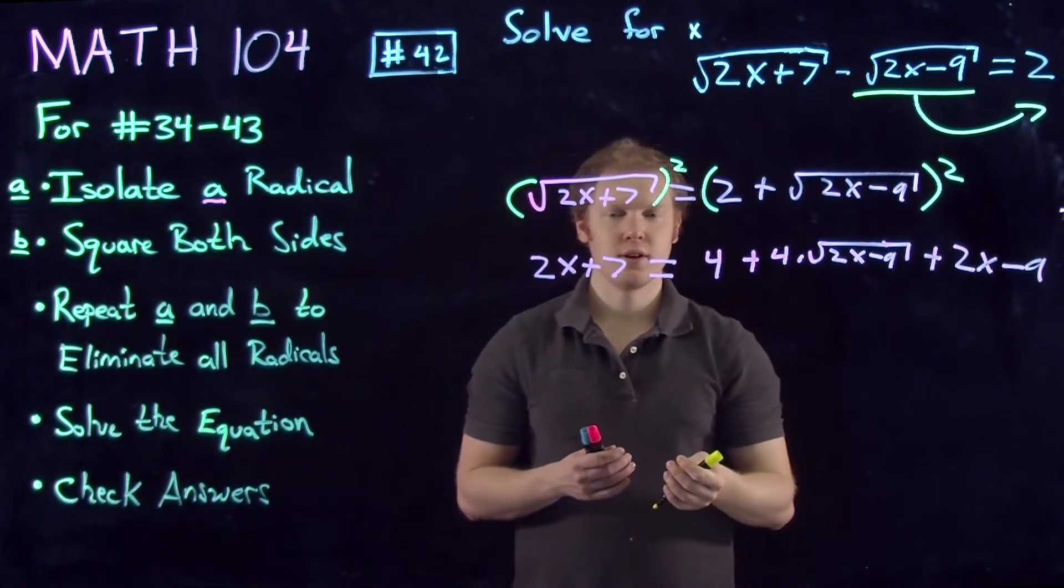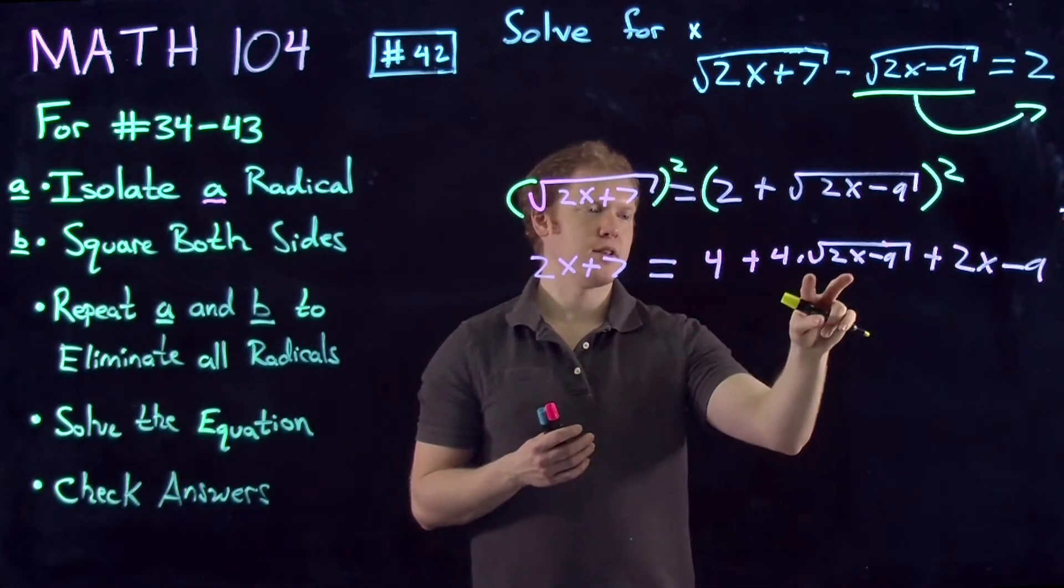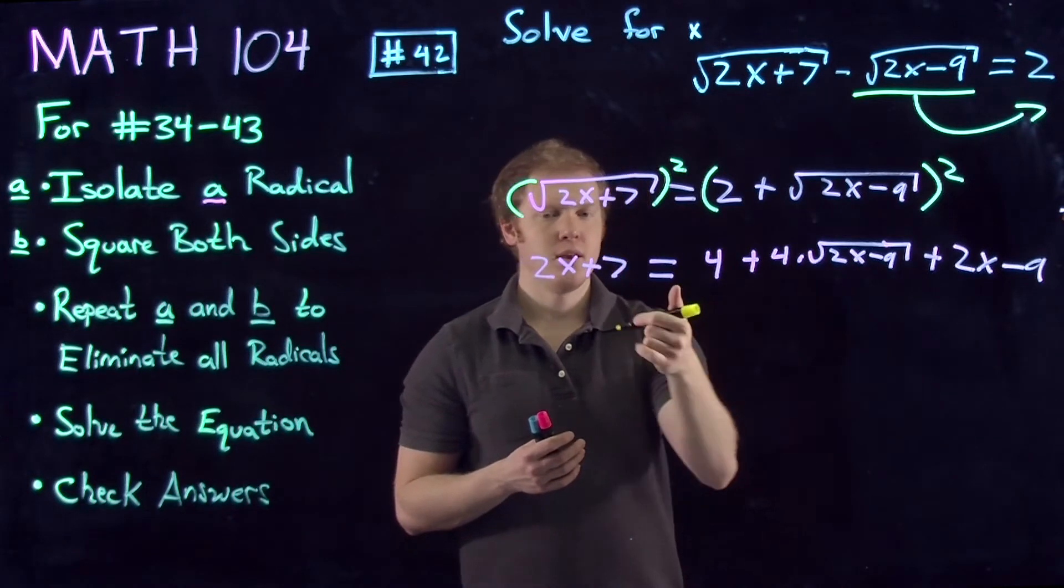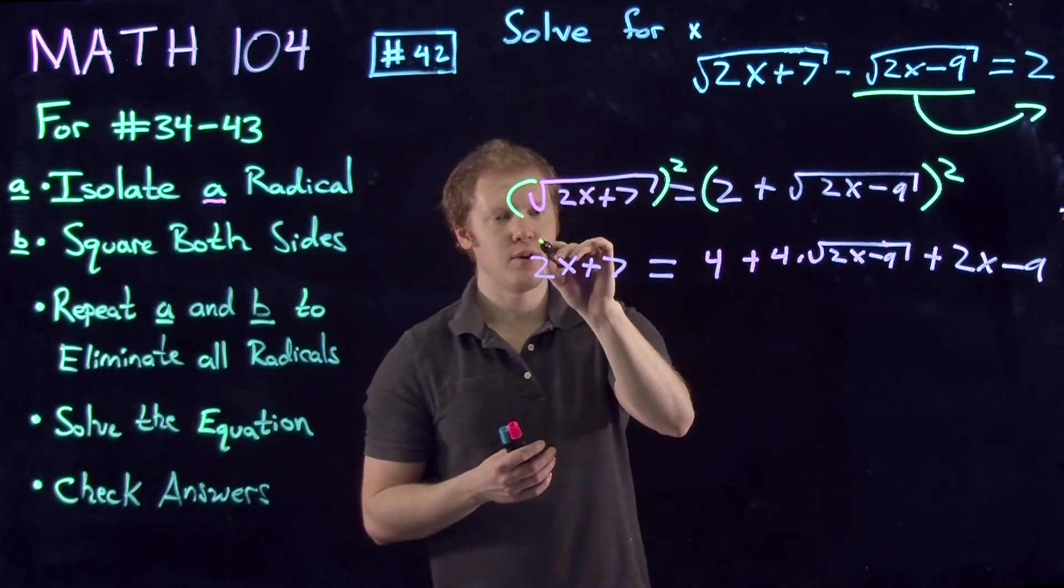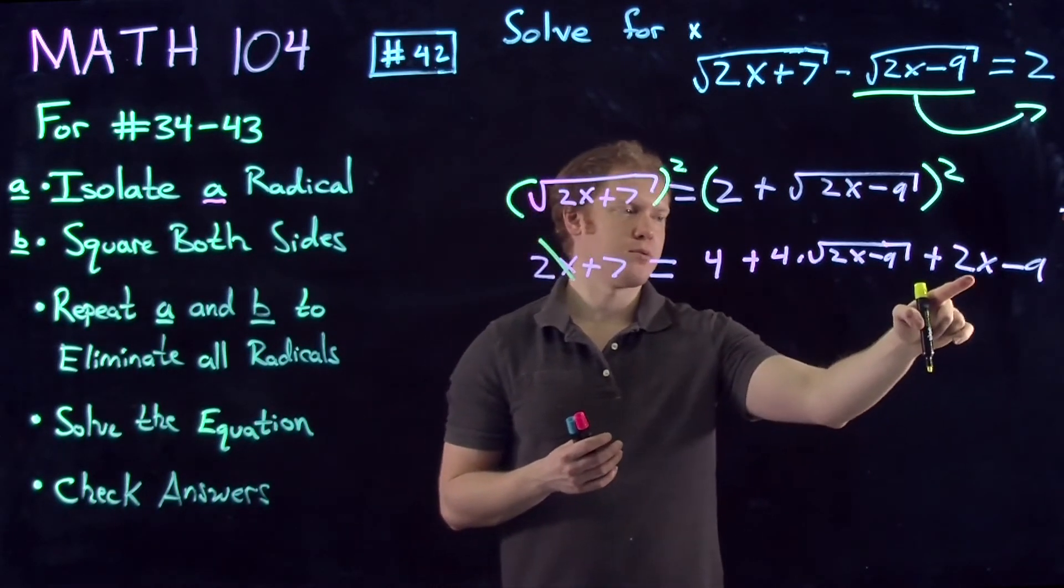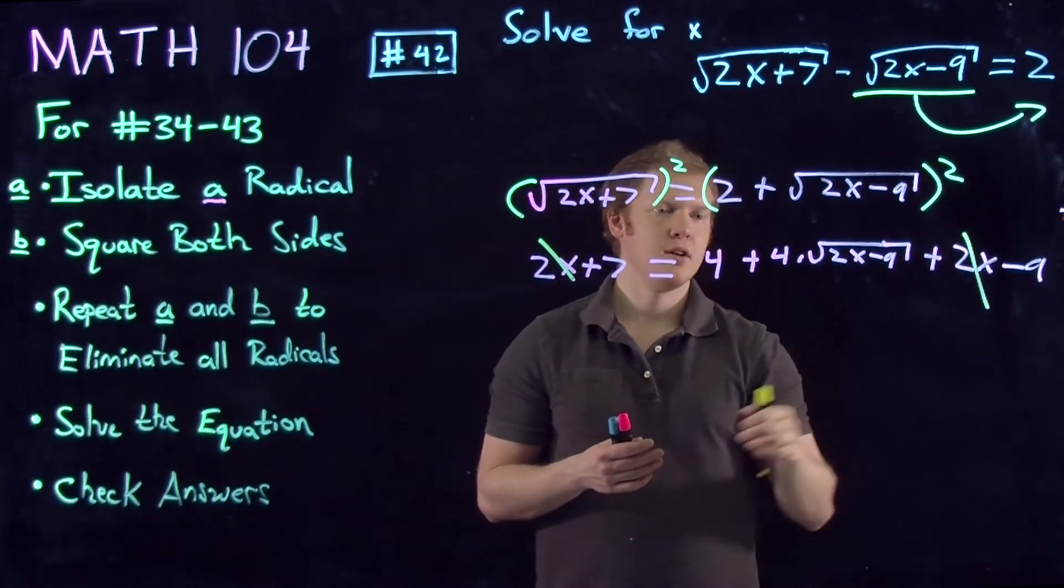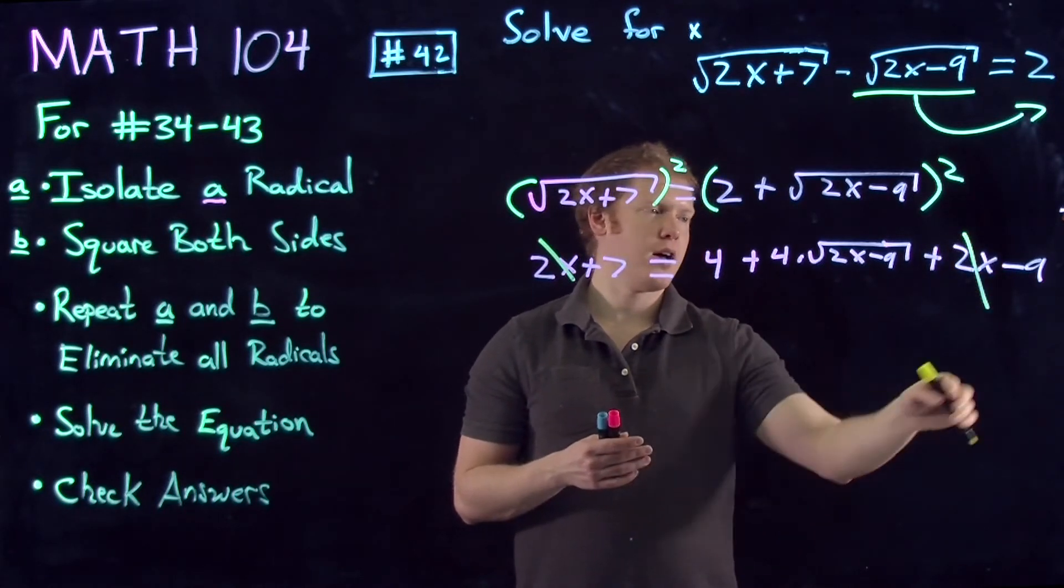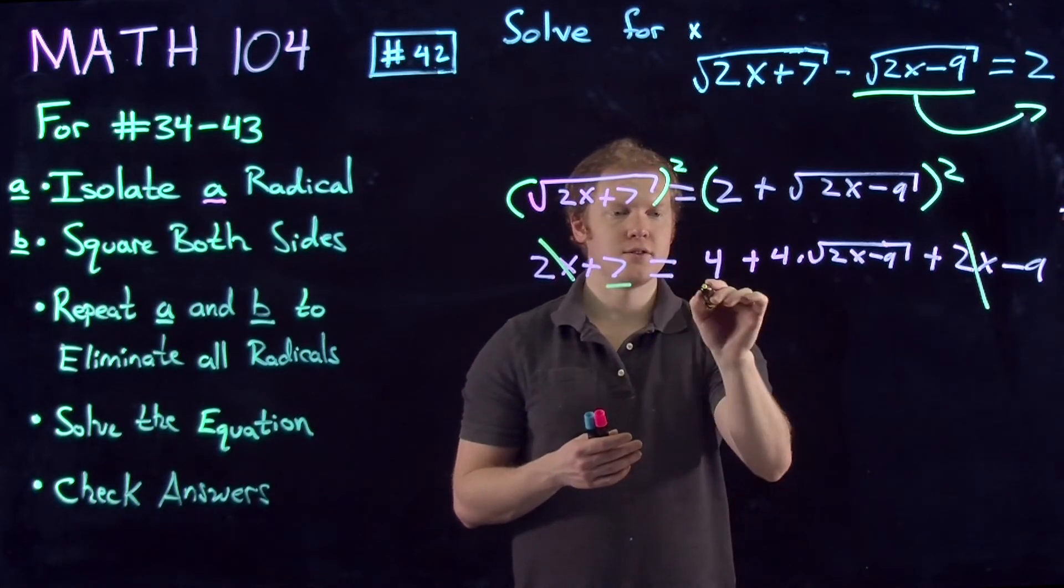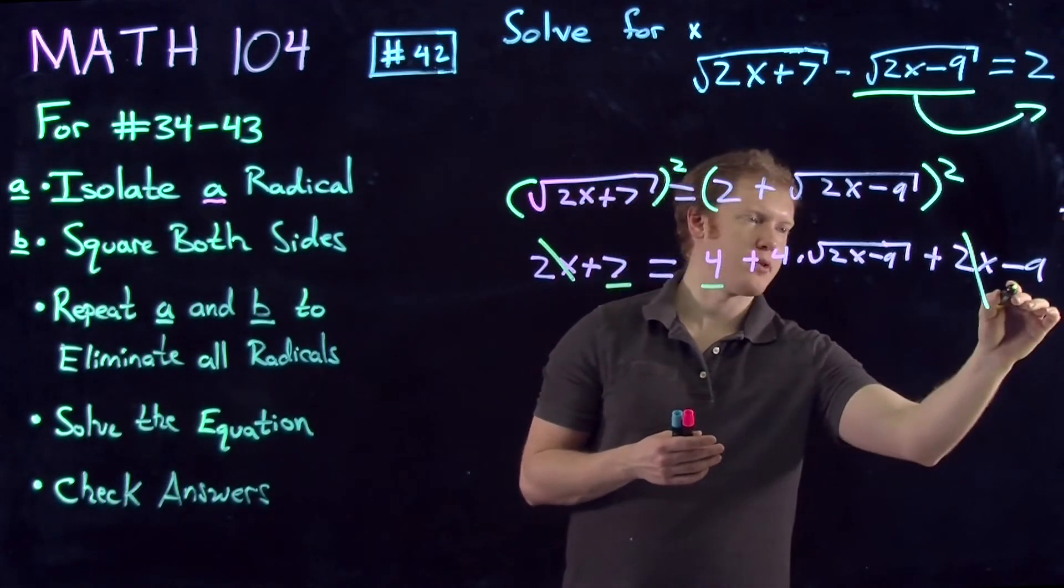Next we want to cancel and isolate the radical again. We will cancel the 2x on both sides since we notice we have one on each.